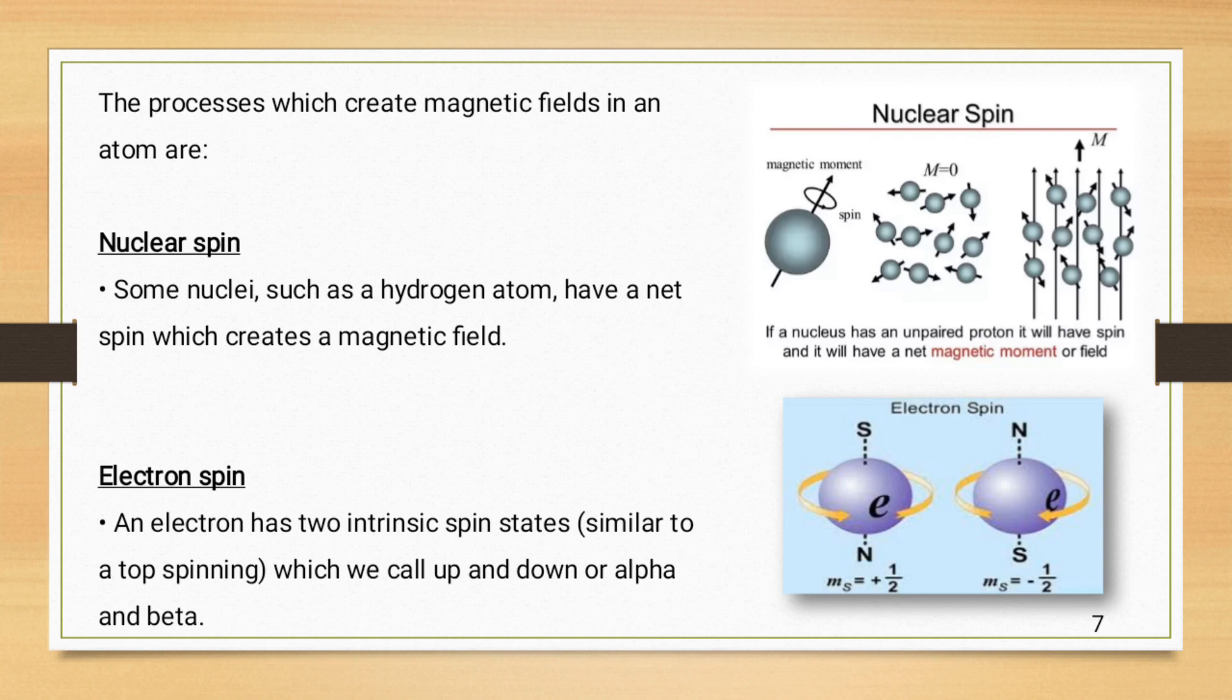Second one is electron spin, and electron has two intrinsic spin states, similar to a top spinning, which will curl up and down, or alpha and beta spin.